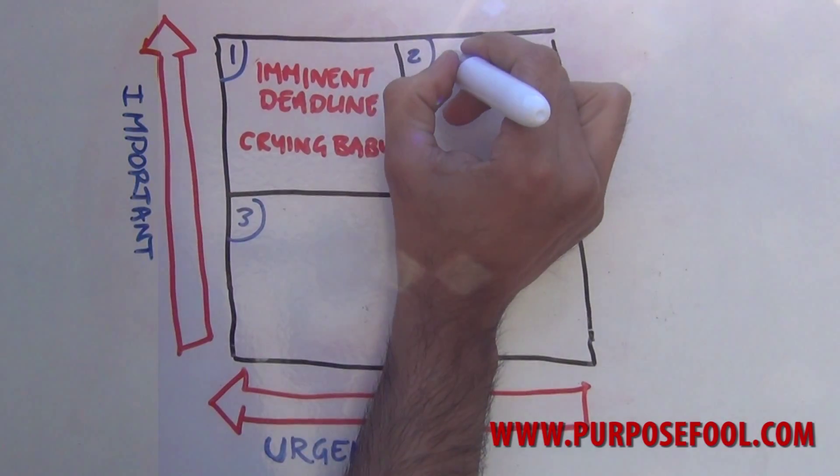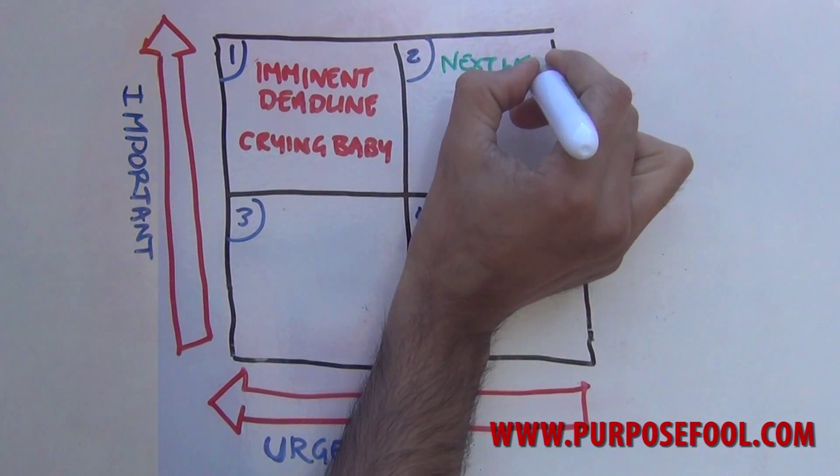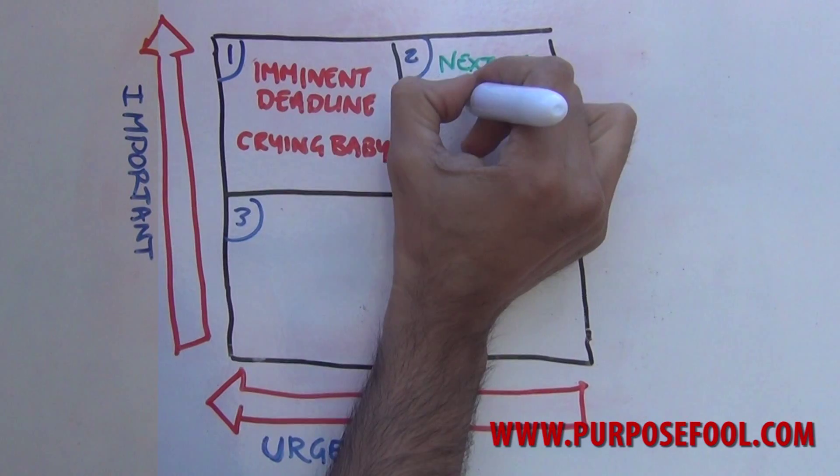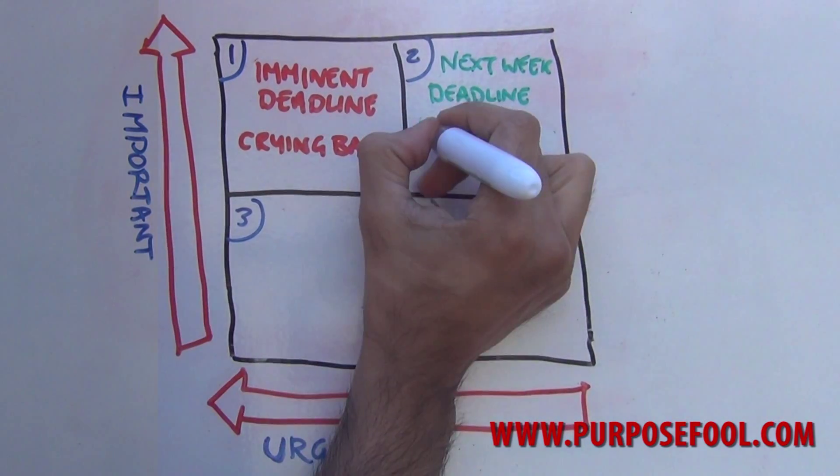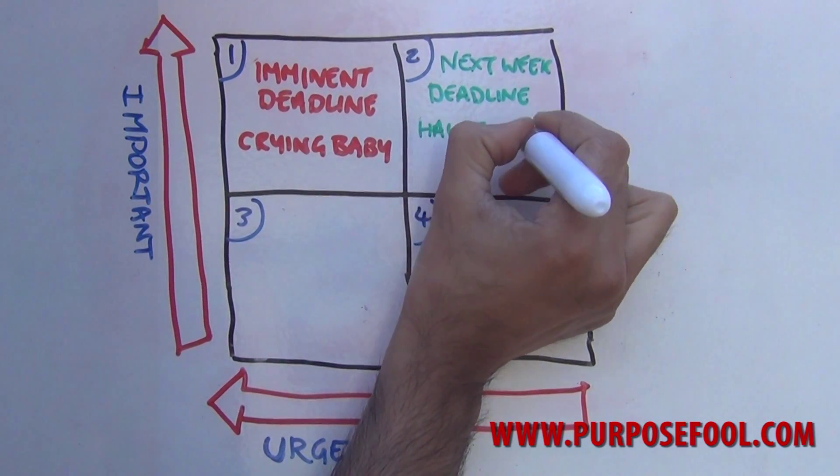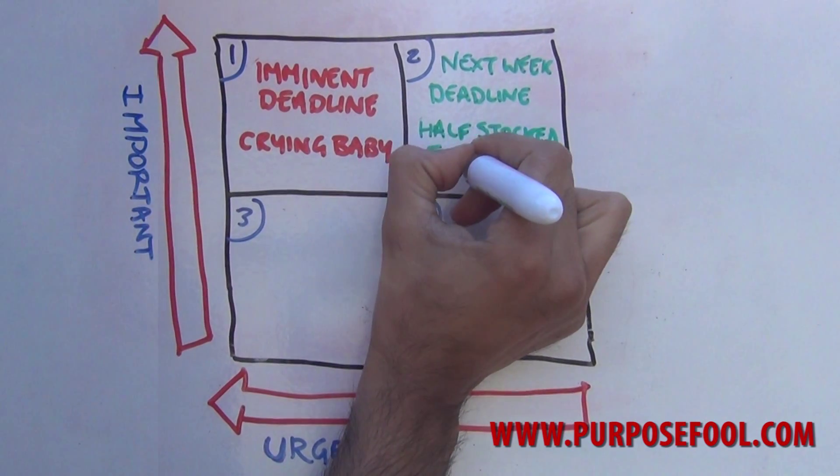Something important but not yet urgent might be something like a deadline next week, a piece of work that you don't yet have to hand in, some emails that you might have to deal with, or the idea of a half-stocked fridge. Not urgent yet but will be.